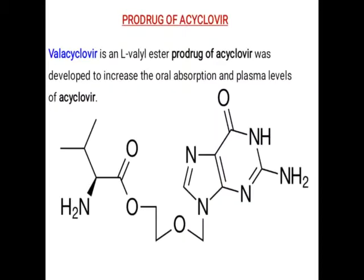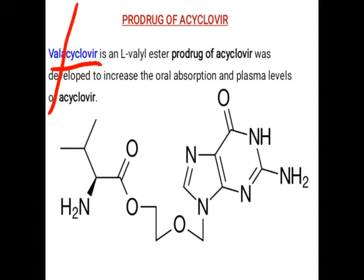For DNA chain termination to occur, acyclovir must be converted into its triphosphate form. There is one prodrug of acyclovir called valacyclovir. As the name indicates, 'val' refers to the valine amino acid component of this prodrug.